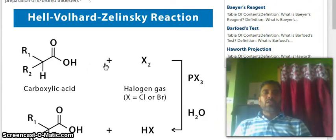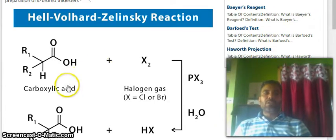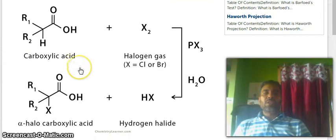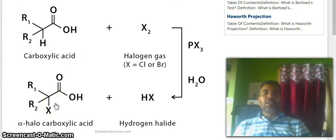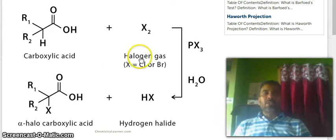This is an example of Hell-Volhard-Zelinsky Reaction. This is carboxylic acid, C double bond O H. This is alpha-halo carboxylic acid. So, conversion from here to here is known as Hell-Volhard-Zelinsky Reaction.